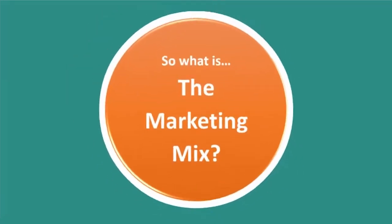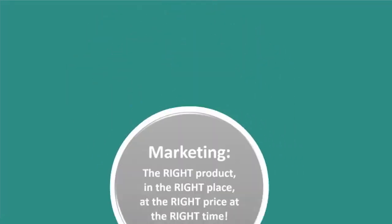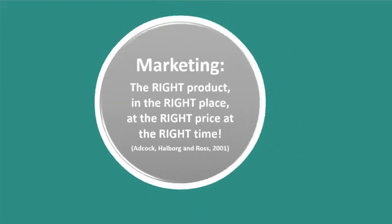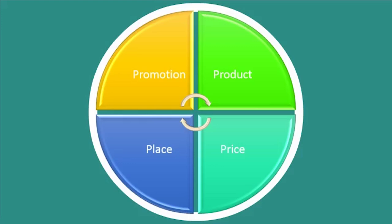So what is the marketing mix? The marketing mix is a model based on a commonly accepted definition of marketing by Adcock, Halberg and Ross, which says that marketing is all about having the right product in the right place, at the right price and at the right time. The original model had four key elements: product, price, place and promotion.